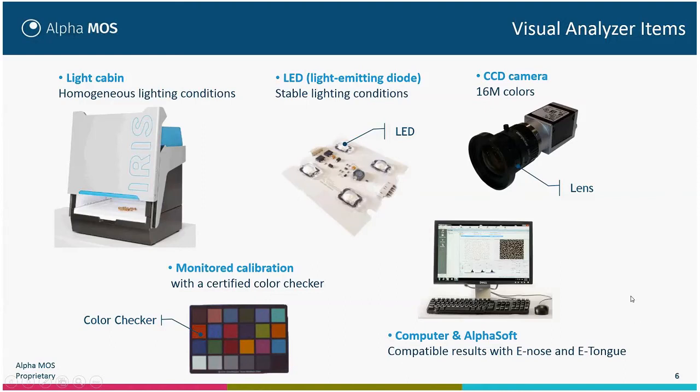We are in kind of a triple dimension when we analyze the same product using the electronic nose, electronic tongue, and electronic eye. We can have the three dimensions of perception in order to do, for example, benchmarking of products.